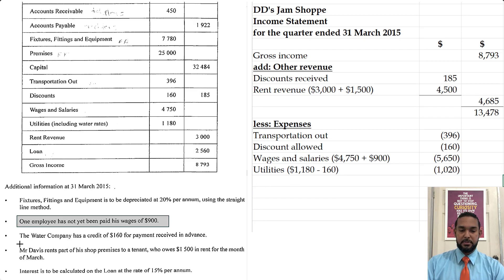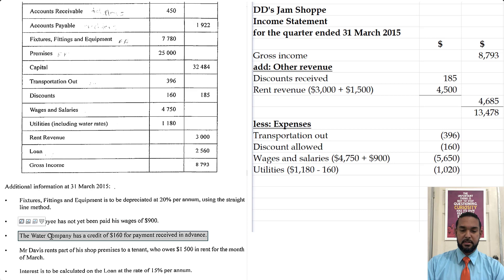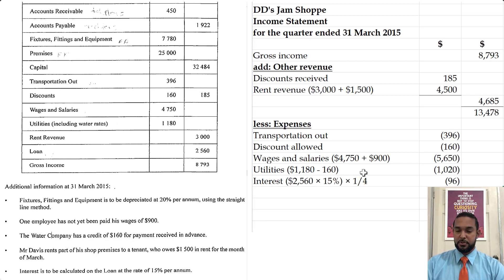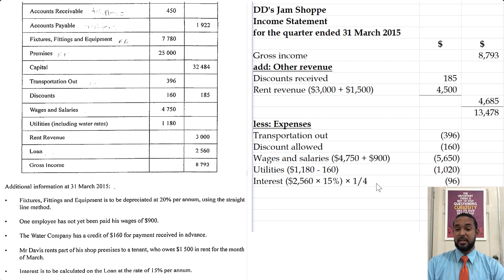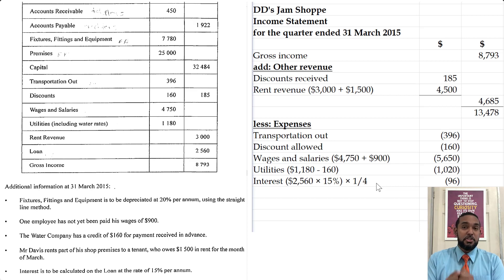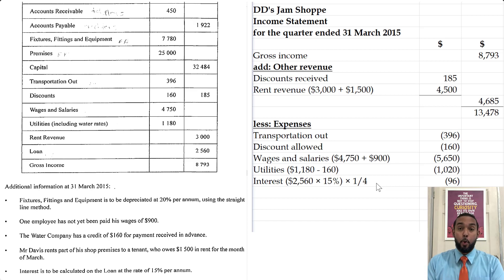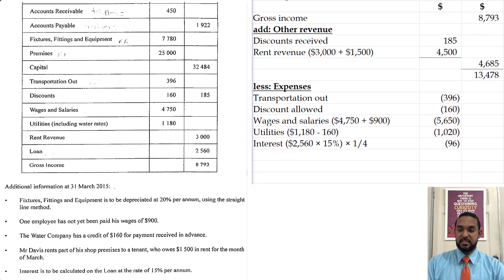Discount allowed is 160. Wages and salaries: 4750 plus the 900 accrued wage we saw in the additional information. Then utilities: 1180 minus the 160 prepaid item. For interest, the loan is 2650, so we find 15% of that and then multiply by a quarter — because we're only doing the income statement for the first quarter. The interest is charged per annum, and since the full year hasn't passed, we can only show the proportion of interest expense incurred thus far.